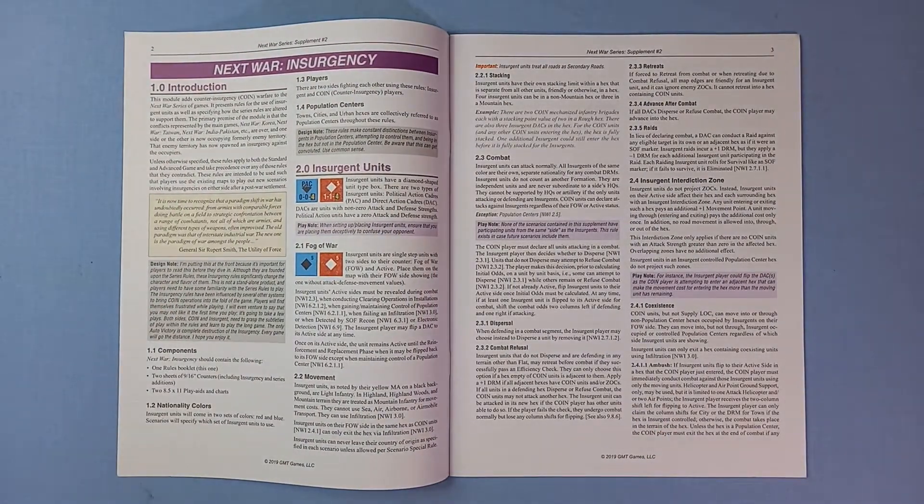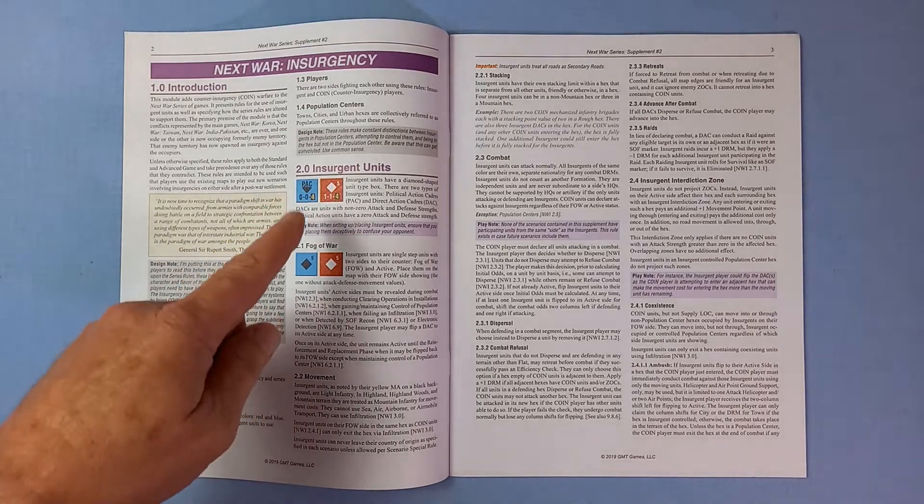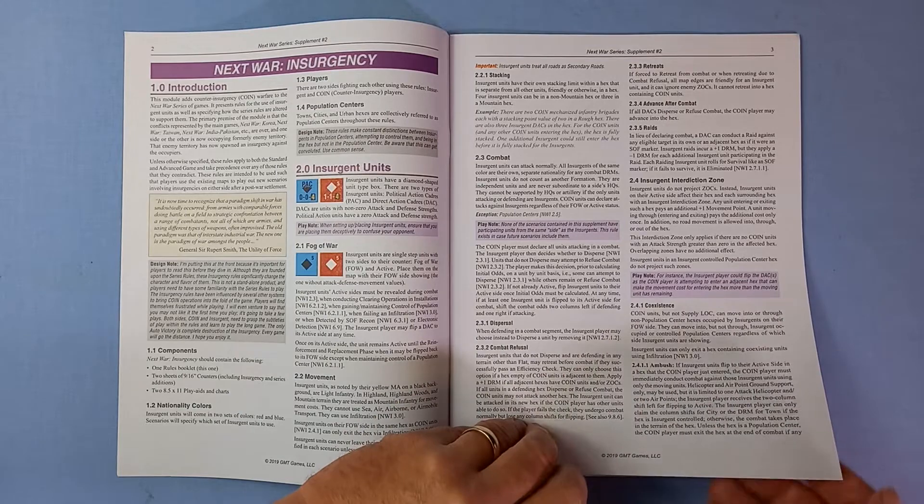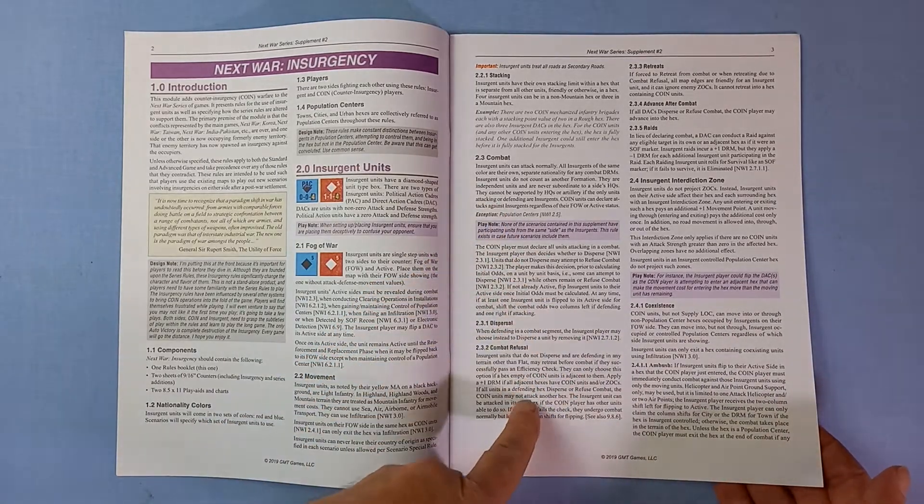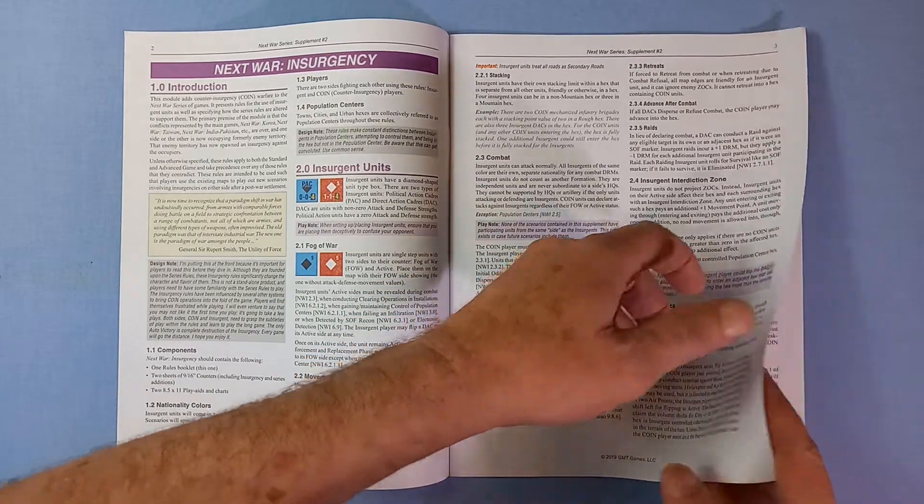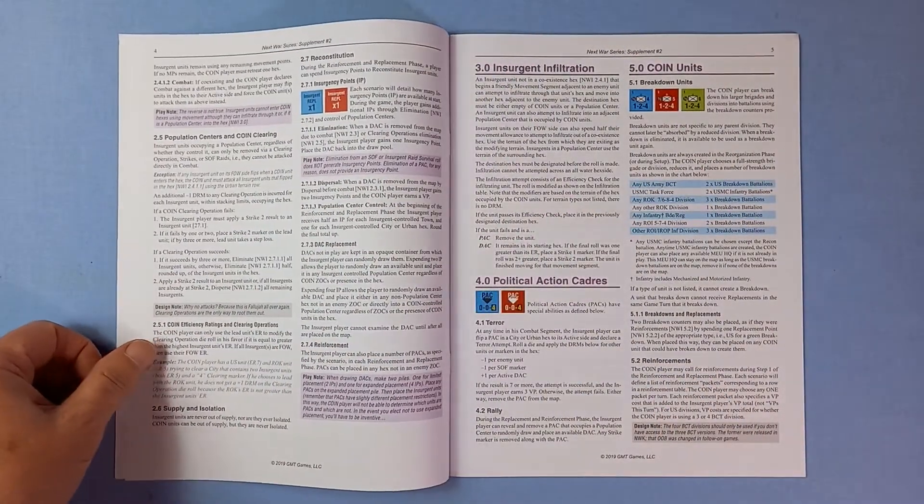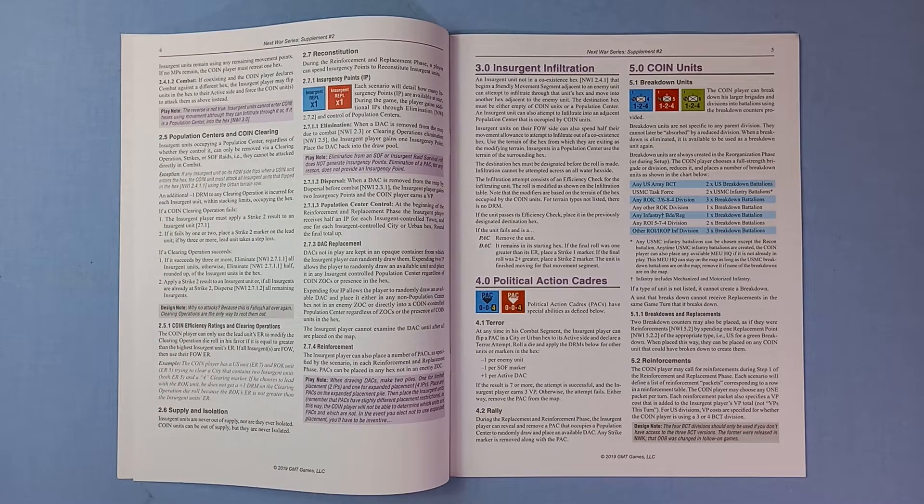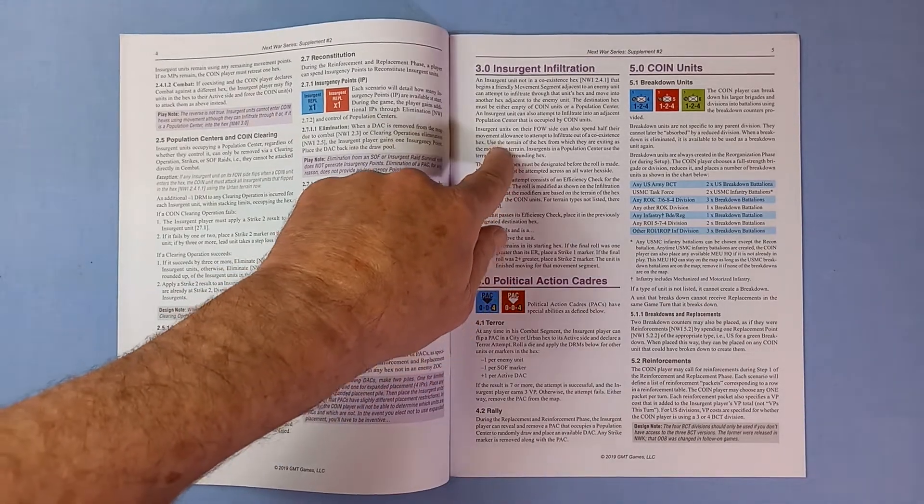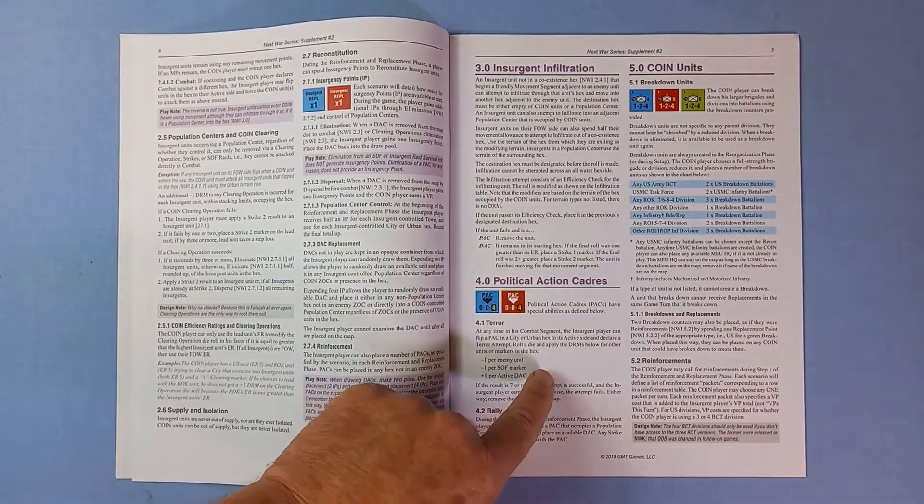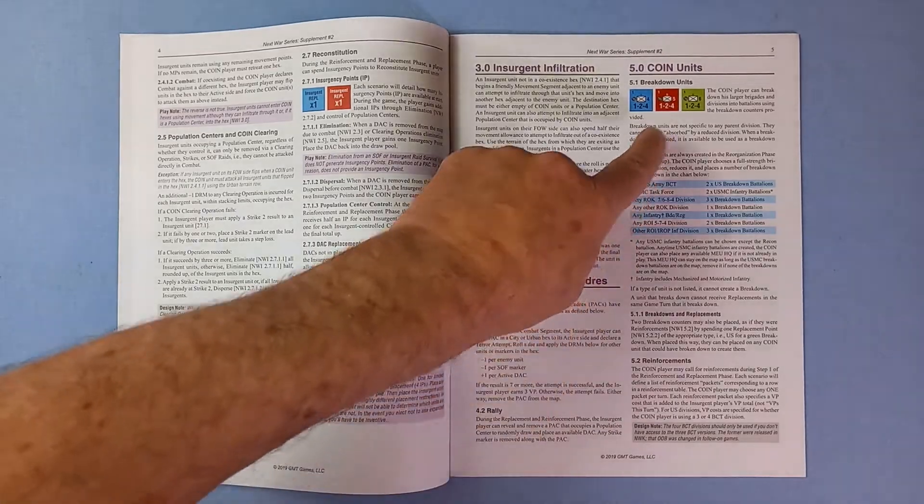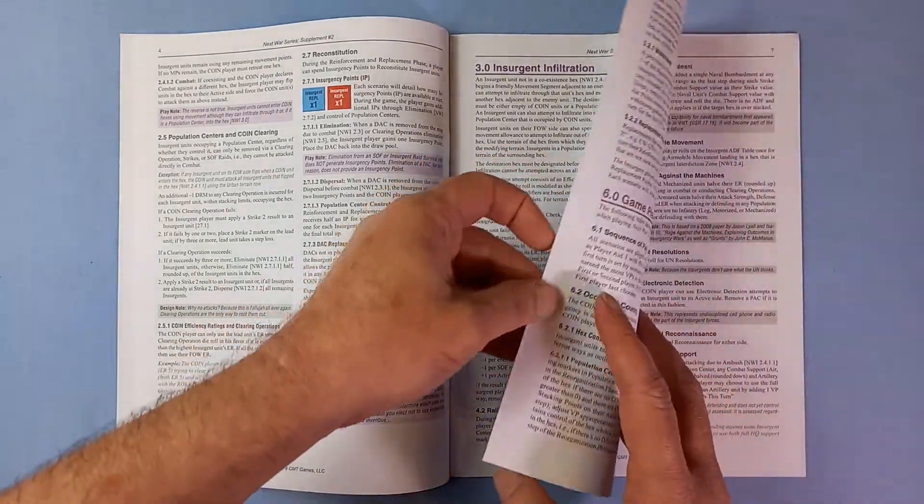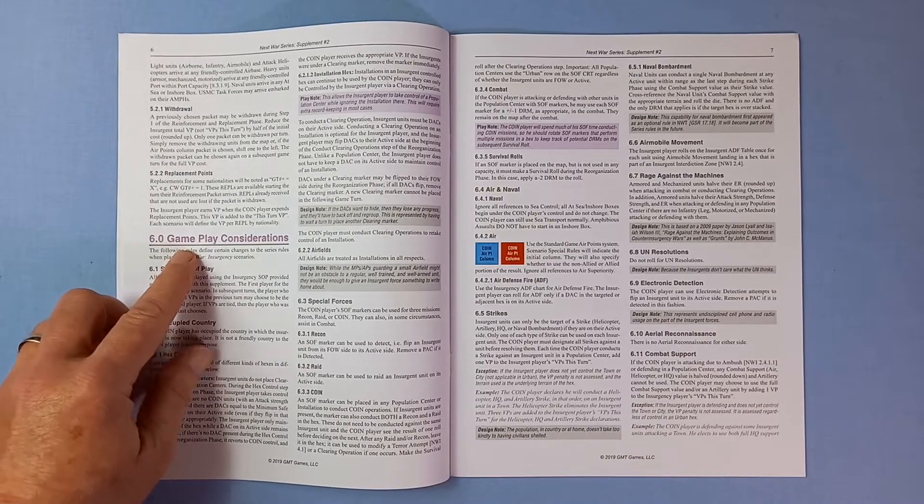So here's the Next War insurgency with introduction, the insurgent units, combat insurgent interdiction zone, population centres and coin clearing, counterinsurgency, reconstitution, insurgent infiltration, political action, card raids, coin units, gameplay considerations.